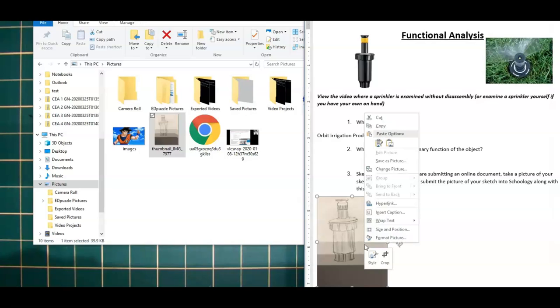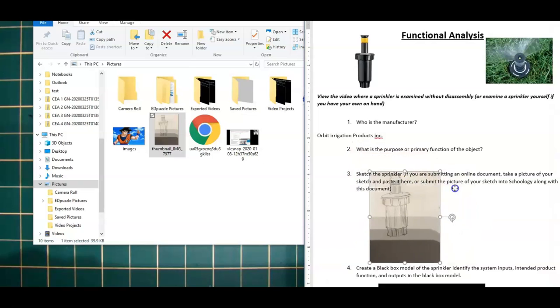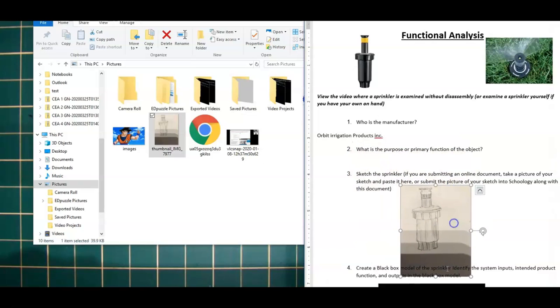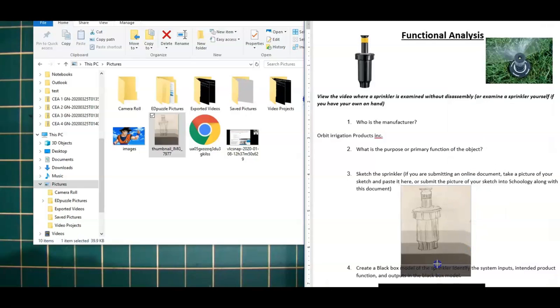But now what I'm going to do is I'm going to right click on this image. And I'm going to go to wrap text. I'm going to put it behind my text so that it doesn't affect the document in any way. It's just behind the text. I can now move it around freely. And I'm going to crop out the bottom of this picture. So how do you do that? I'm going to right click and go to crop. And I'm just going to drag this up until that bottom part's not in there. And you can see now I have a sketch of my sprinkler in my document.